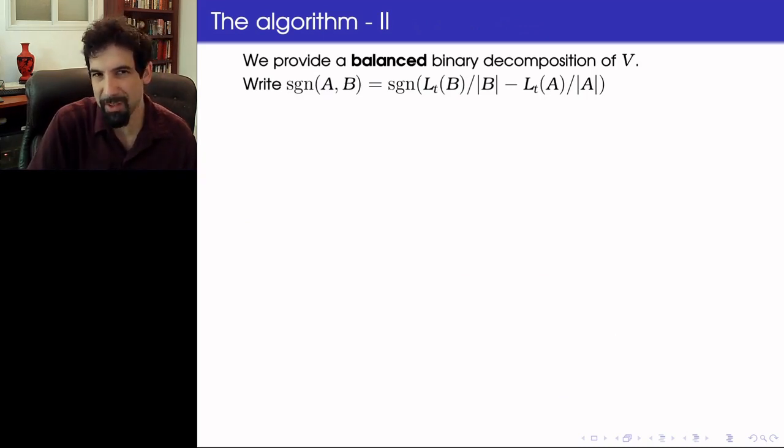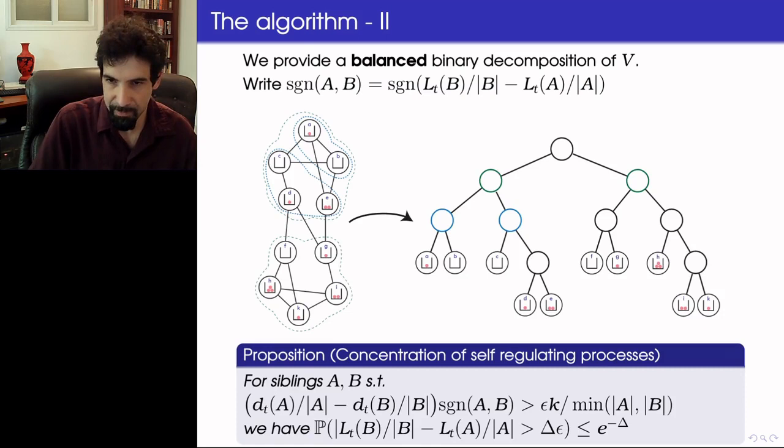So in order to explain what drifts are desirable for us, what we need is to provide a balanced binary decomposition of V. So what you can see here is a graph on 10 vertices, A through K. In each vertex here, you see a small bin representing it and balls which represent its present load, so we're already in the middle of the process.